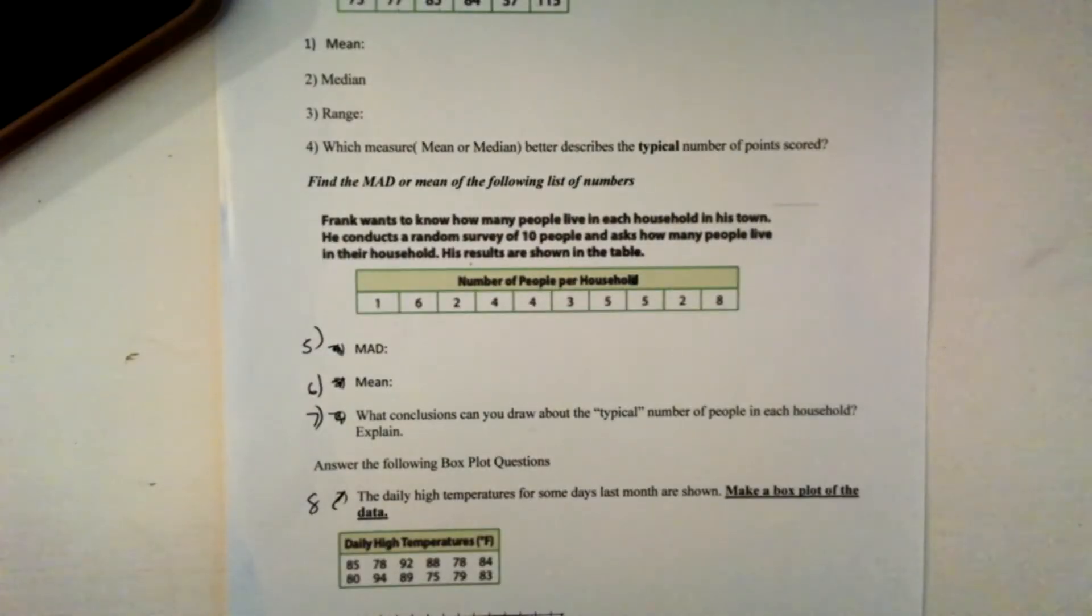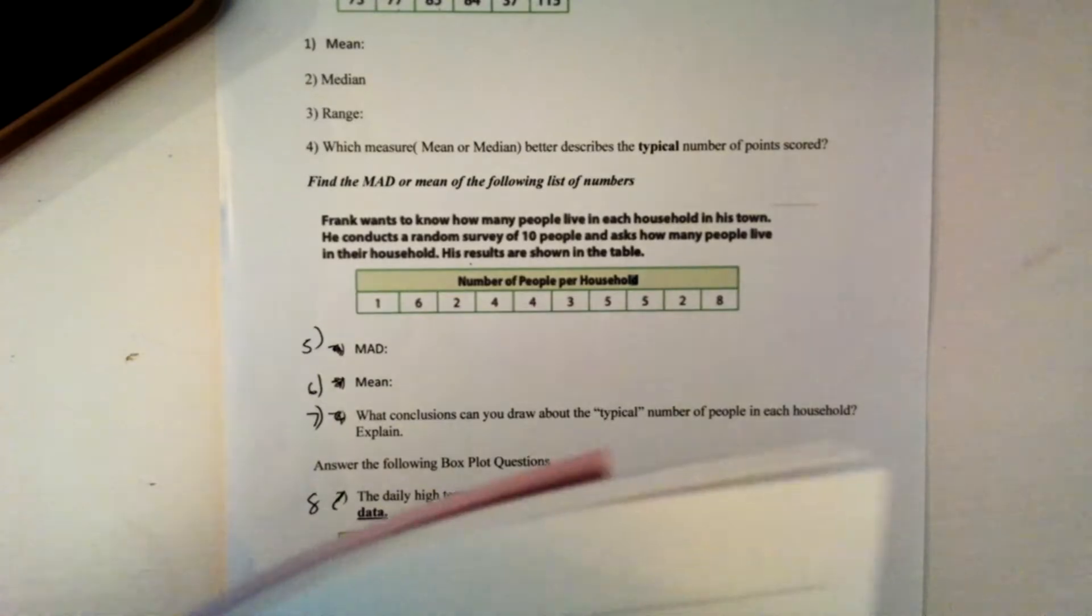Number 5. Frank wants to know how many people live in each household in his town. He conducts a random survey of 10 people and asks how many people live in their household. This is also shown below. So we're asked to find the MAD or the mean of the following list of numbers here. So we need to find the MAD of this data set here. So you're going to want to use the charts I gave you to fill in this information. So I'll pause the video and I'll fill some information in and then I'll ask you a few questions.